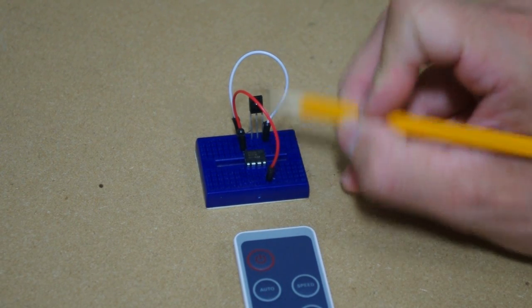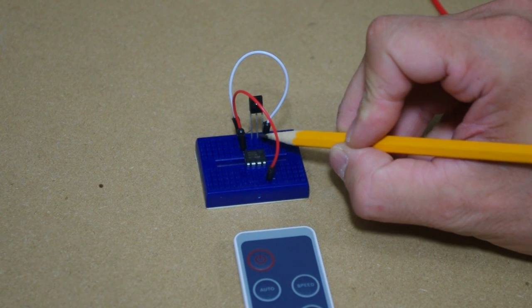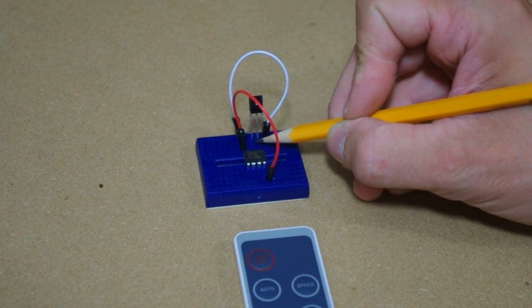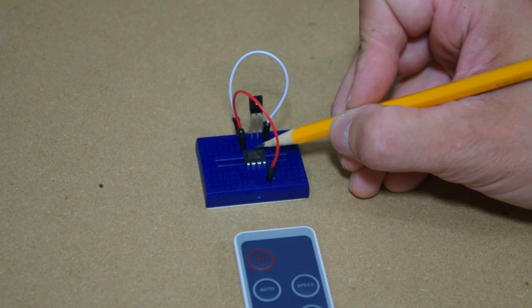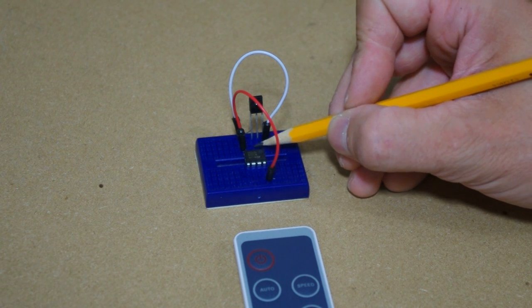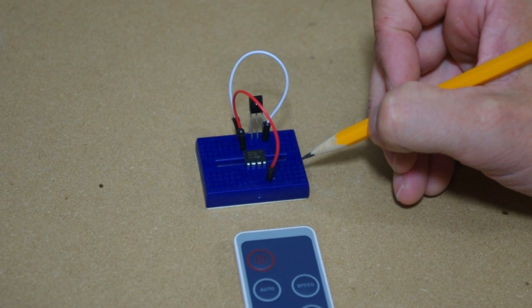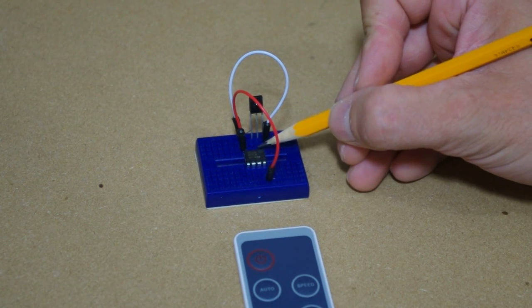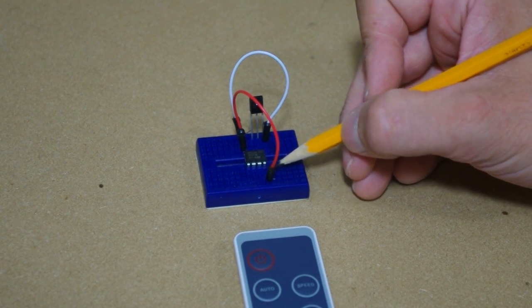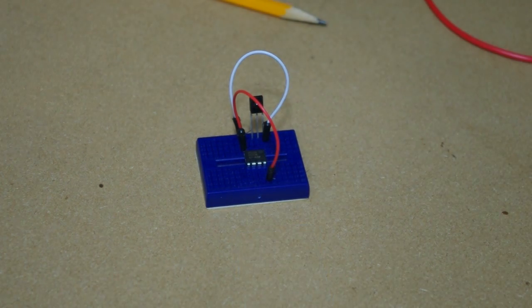Now, as we've seen on the oscilloscope, every time we press the button on the remote control, pin number one on the IR demodulator goes low, and that's connected to pin number two on the 555. The 555, when it's in monostable mode, when pin two goes low, the output will go high for 1.1 time constants.